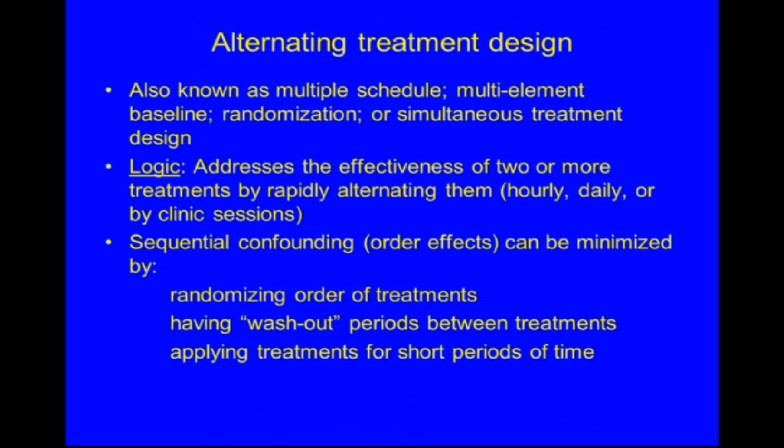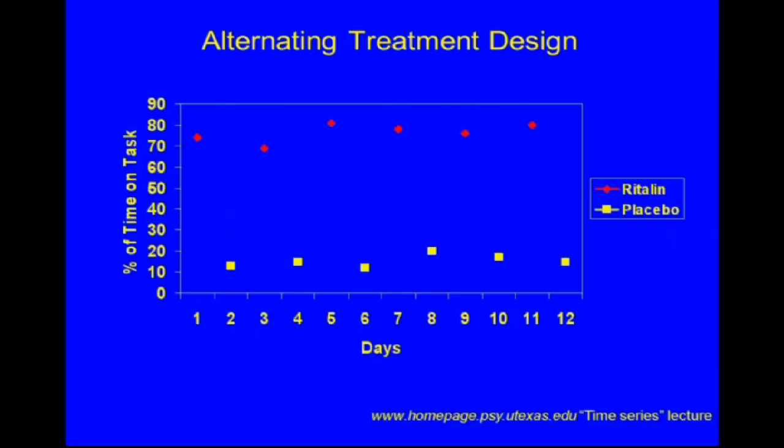The alternating treatment design, also known as multiple-schedule, multi-element baseline, randomization, or simultaneous treatment design, addresses the effectiveness of two or more treatments by rapidly alternating them — either hourly, daily, or by clinic sessions. Sequential confounding or order effects can be minimized by randomizing the order of treatments, having washout periods between treatments, and applying treatments for short periods of time. In a hypothetical study of percent time on task in a young person with ADHD, alternating between Ritalin and placebo, time on task was much higher during the Ritalin phase.